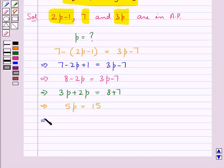Now, dividing both sides by 5, we get 5P upon 5 is equal to 15 upon 5. 5, 5 gets cancelled and 5, 3 times is 15. So, this gives us P is equal to 3.